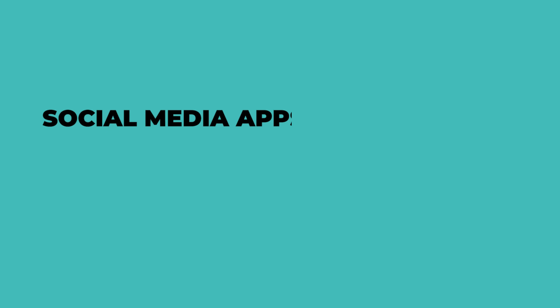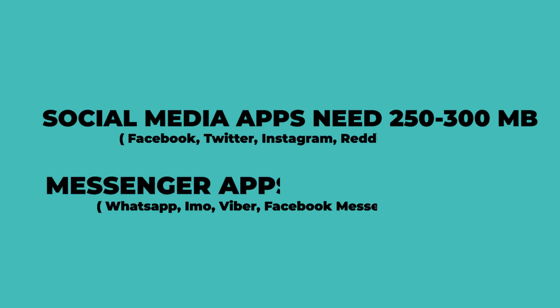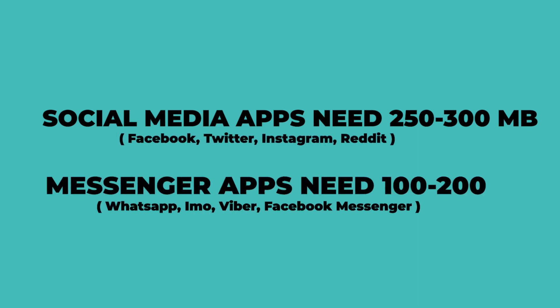Then come to everyone's favorite social media apps. Social media apps like Facebook, Twitter, Instagram, and Reddit take an average of 250 to 300MB of RAM to run. And messenger apps like WhatsApp, IMO, Viber, and Facebook Messenger take an average of 100 to 200MB of space.